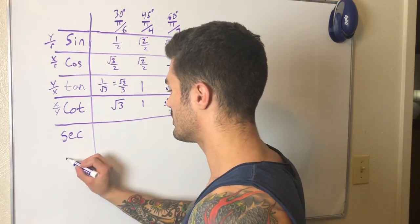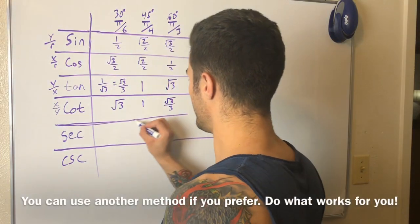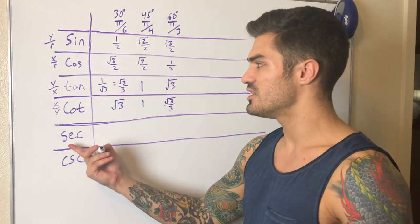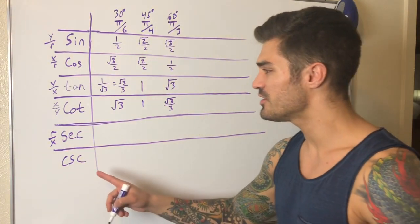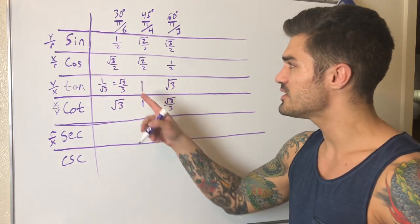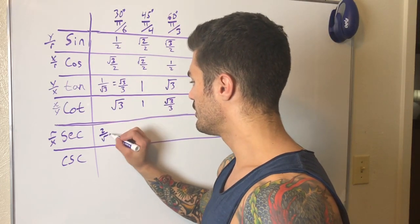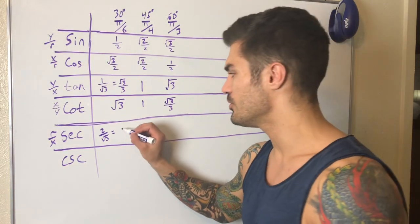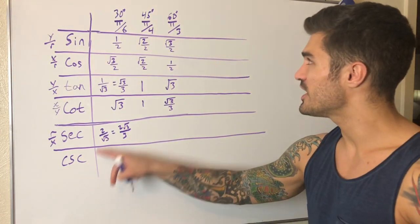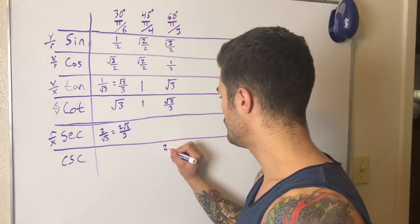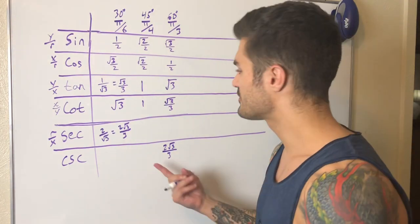By noticing this pattern we can build the table even quicker. Once I get secant, I'll use that to get cosecant. Secant is defined as r/x, or equivalently the reciprocal of cosine. So the reciprocal of cos(30°) = √3/2 gives us 2/√3. Rationalizing by multiplying by √3/√3, we get 2√3/3. By the co-function identity, that also means cosecant of 60° = 2√3/3.